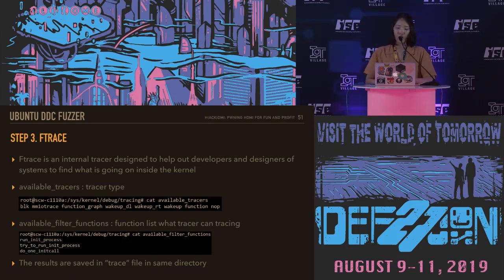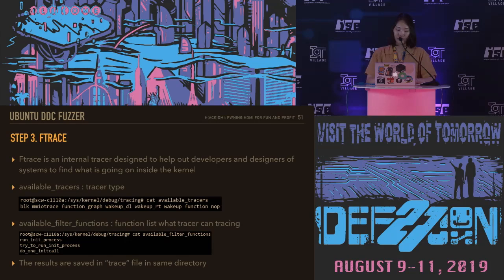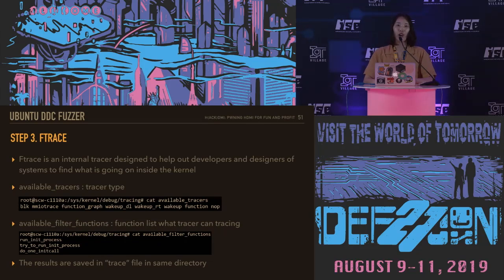There are various tools to trace the code stack and we used Ftrace. Ftrace is an internal tracer designed to help developers and designers find what is going on inside the Linux kernel. The files for using Ftrace are in the path /sys/kernel/debug/tracing, and there are several types of tracers. The types are defined in the file 'available_tracers', and the traceable function list is in the file 'available_filter_functions'. Trace results are stored in the file 'trace'.